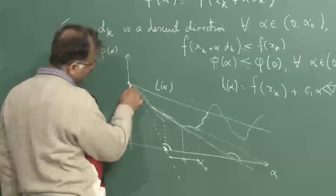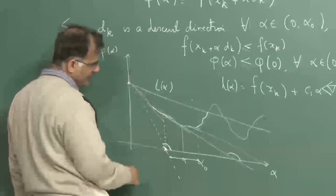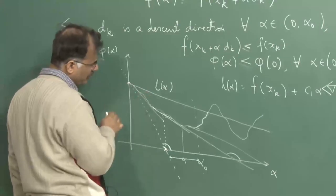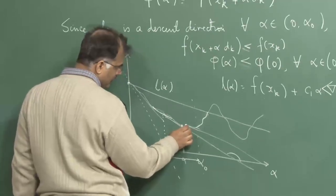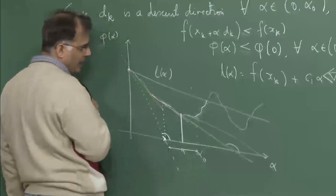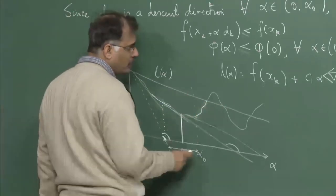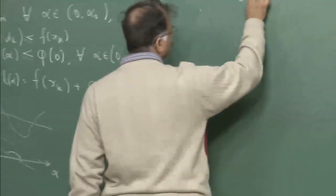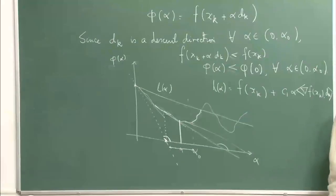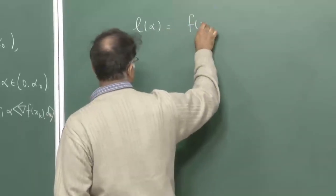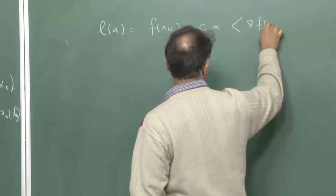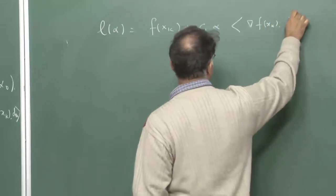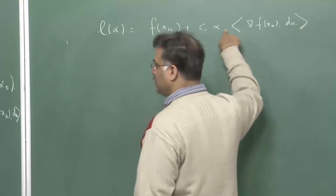Whatever statement we make, we need to prove it. Even if we are making approximations with Wolfe conditions and Armijo conditions trying to find alpha approximately, it is imperative that such an alpha actually exists. So when we run the algorithm, we are sure that this operation will give us something. Now we go for the proof.